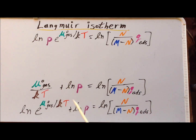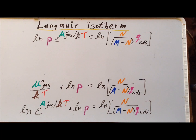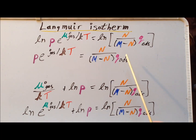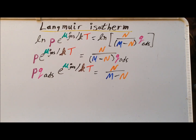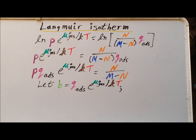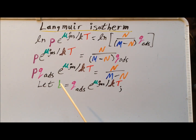We notice that two of the three terms involve the natural logarithm. We use the property that the natural log of e to the x is simply x, applying this in reverse so that mu naught gas divided by kT becomes the natural log of e raised to that power. We then combine the pressure term and the exponential term on the left-hand side using the property that log of a plus log of b equals log of a times b. Since we have natural logs on each side, we can drop the logarithms. Multiplying each side by q adsorbed, we get that p times q adsorbed times e to the mu naught gas over kT equals n divided by (m minus n). We assign a new variable b equal to q adsorbed times e to the mu naught gas divided by kT, noting that b is a function of temperature T.